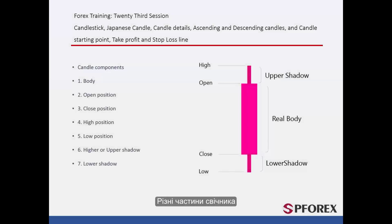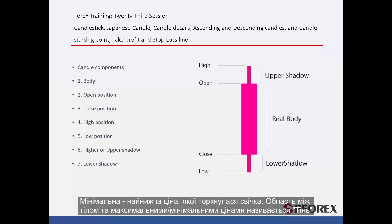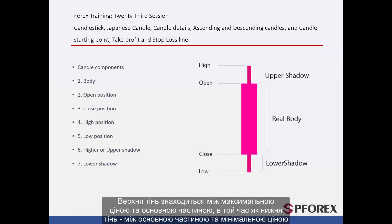Regarding the different parts of a Candlestick: a candle has a main body, also known as the real body. Open is the price at which the candle forms. Close is the price at which the candle is closed. High means the highest amount the candle reached, and low is the lowest price the candle touched. The area between the body and the high and low prices is called the shadow. The upper shadow is between the high and the main body, while the lower shadow is between the main body and the low.